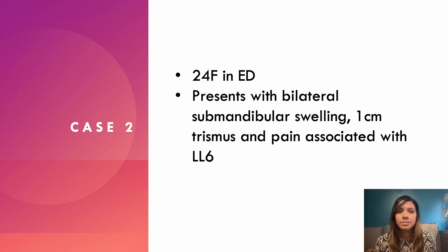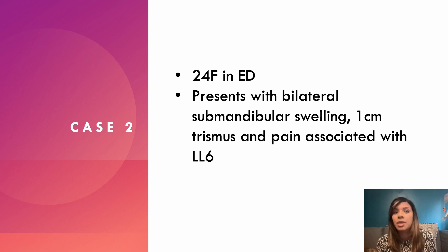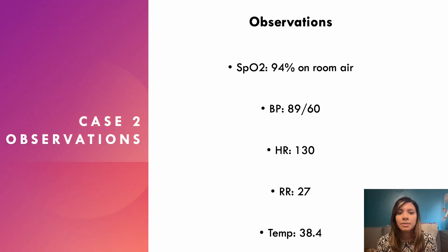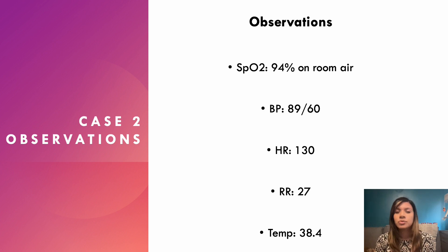Now on to the next case. You're on call and called by A&E about a 24-year-old female presenting with bilateral submandibular swelling, trismus of about a centimetre, and pain on the lower left side. Always gather the past medical history and observations. The observations show saturations are borderline at 94%, respiratory rate is 27 — very high — heart rate is 130, blood pressure has dropped to 89/60, and she has a raised temperature.